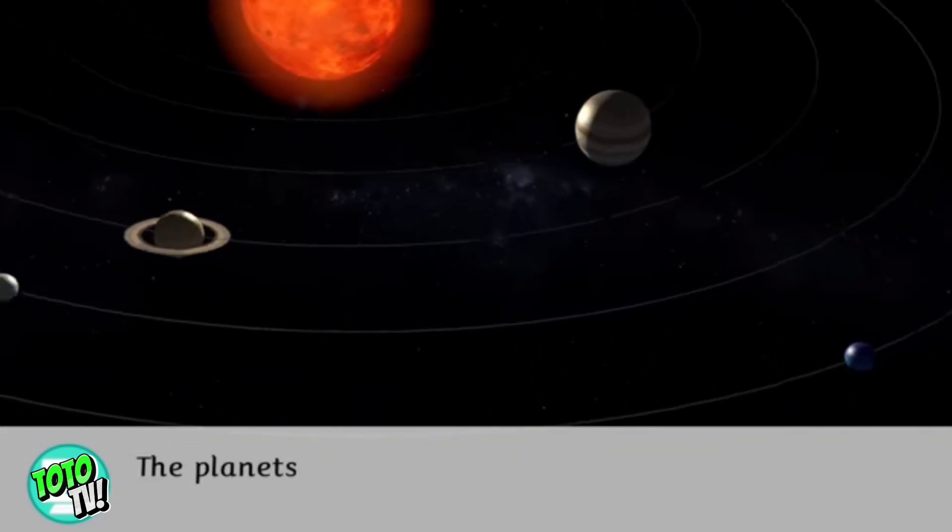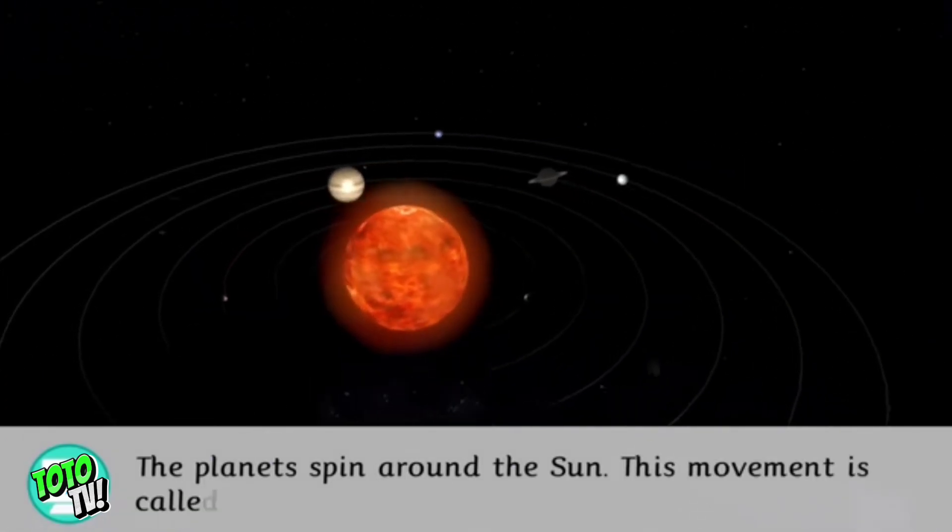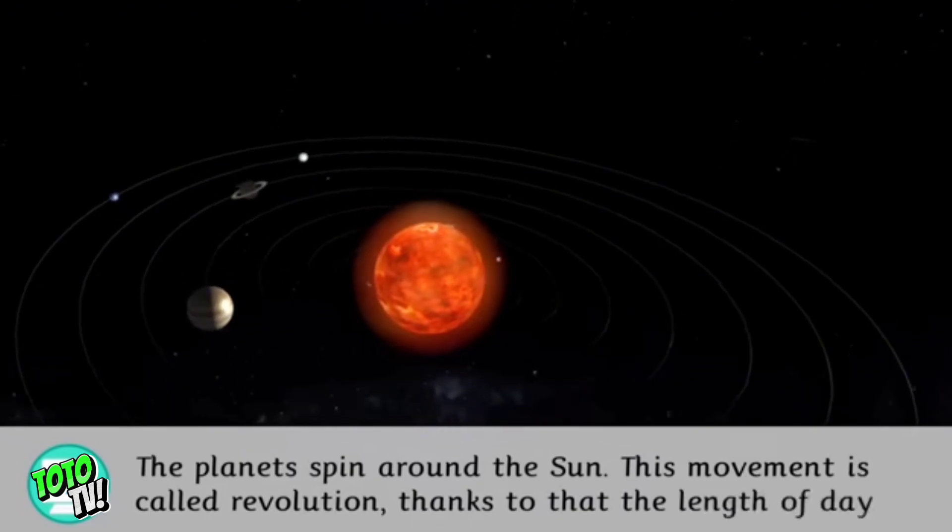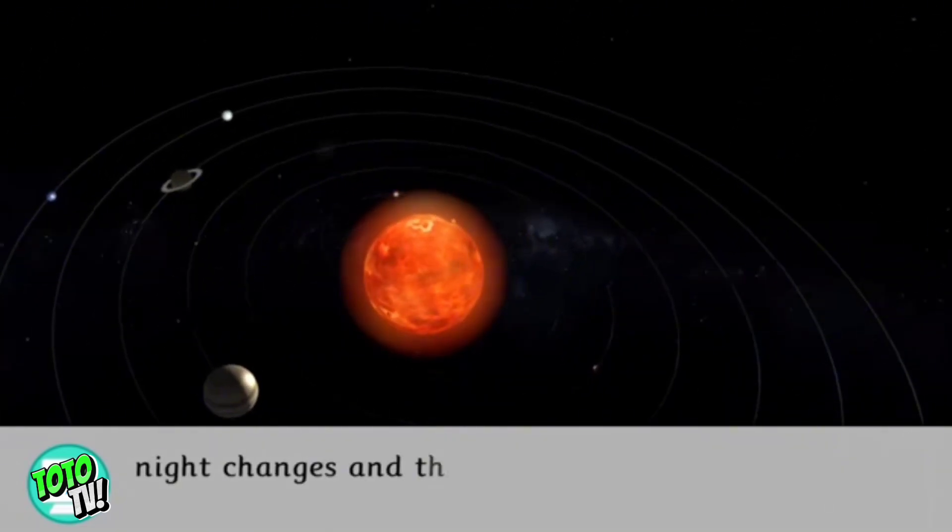The planets spin around the Sun. This movement is called revolution. Thanks to that, the length of day and night changes, and there are different seasons.